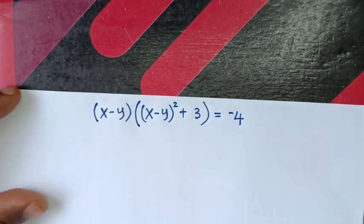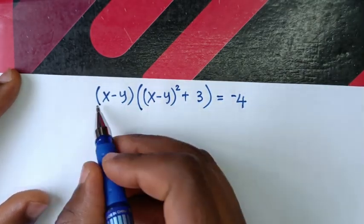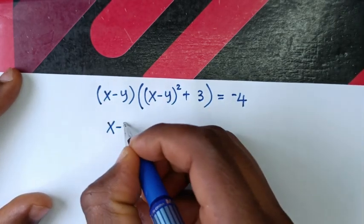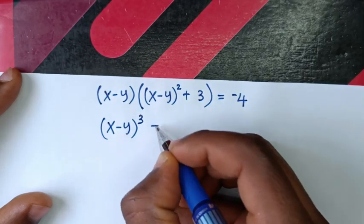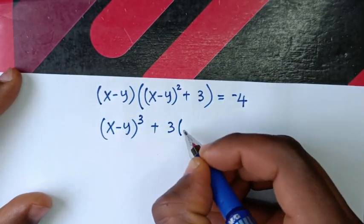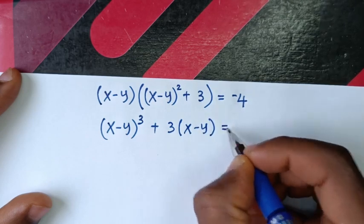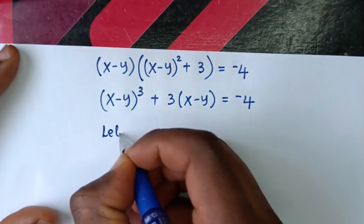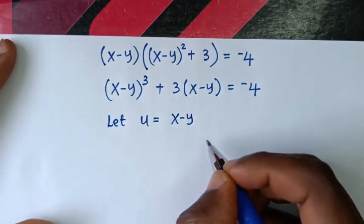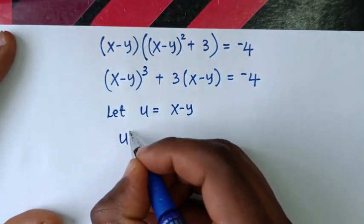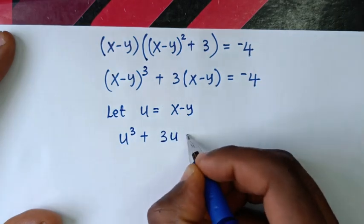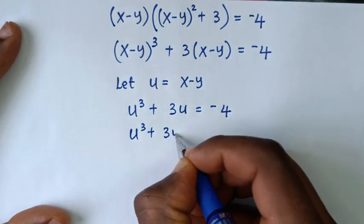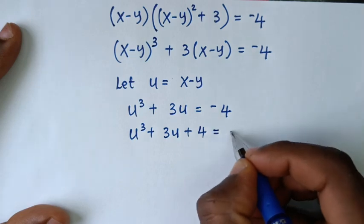Multiplying through, we get (x − y)³ + 3(x − y) = −4. Letting u = x − y, the equation becomes u³ + 3u = −4, so u³ + 3u + 4 = 0.